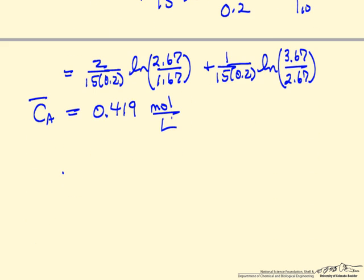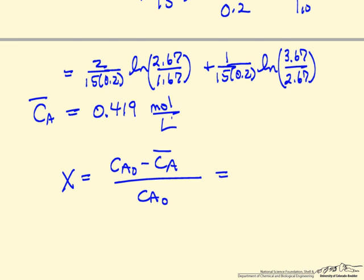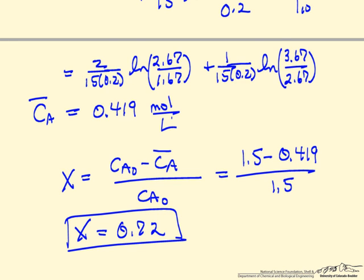For the conversion, it's the inlet concentration minus the average outlet concentration divided by the inlet: 1.5 minus 0.419 over 1.5. So the conversion is approximately 72% — meaning 72% of the feed is converted in a system with this residence time distribution.